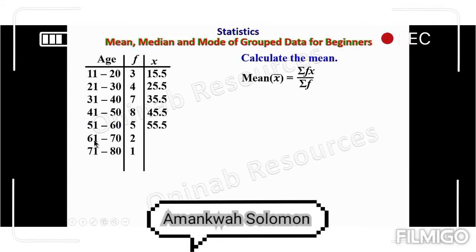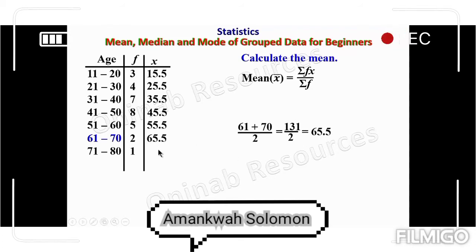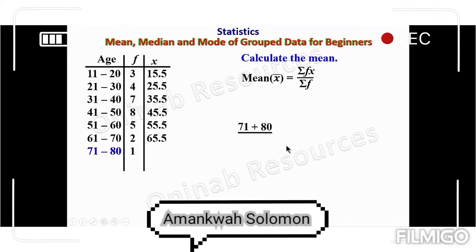For class interval 61 to 70: 61 plus 70 divided by 2 gives 131 divided by 2, which is 65.5. For the last class interval, 71 to 80: 71 plus 80 divided by 2 gives 151 divided by 2, which is 75.5 — the mean value for 71 to 80.